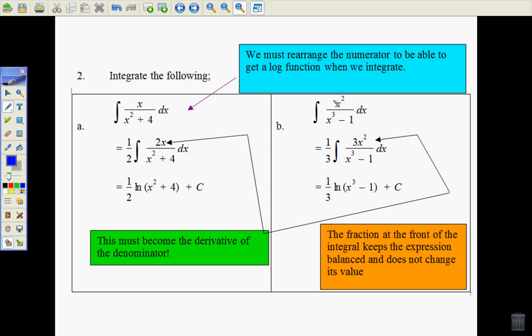We really would like 3x squared up top, because 3x squared is the derivative of x cubed minus 1. So if we multiply by 3, we have to multiply by 1 third as well, because 1 third times 3 gives us the 1 that we had there. Which now allows us to integrate, but then we're able to put it back to 1 third of natural log of x cubed minus 1.